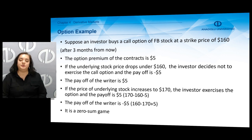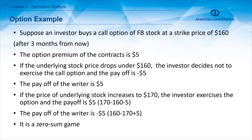Consider an option example. An investor buys a call option — a call option gives the holder the right to buy, whereas a put option gives the holder the right to sell. Suppose the call option is on a stock at a strike price of 160 dollars, expiring three months from now, with an option premium of five dollars. If the underlying stock price drops below the strike price, the investor decides not to exercise the call option, because he or she has the opportunity to buy at the lower market price. Therefore, the long party does not exercise the option.